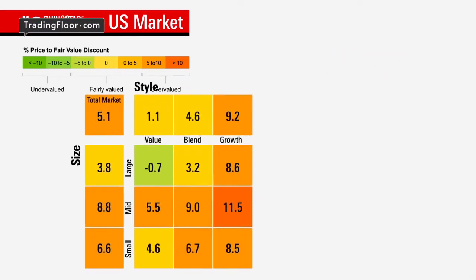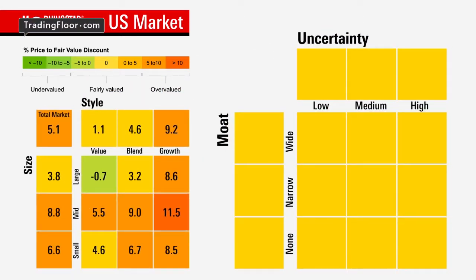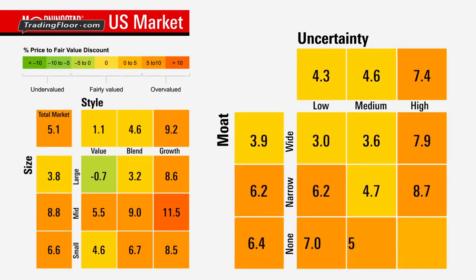In this next style box, we've put the moat rating on the vertical axis and the uncertainty rating on the horizontal. Here, you can see that the most overvalued area of the market is high uncertainty stocks, and the one area that offers the best value is wide moat companies with low uncertainty.